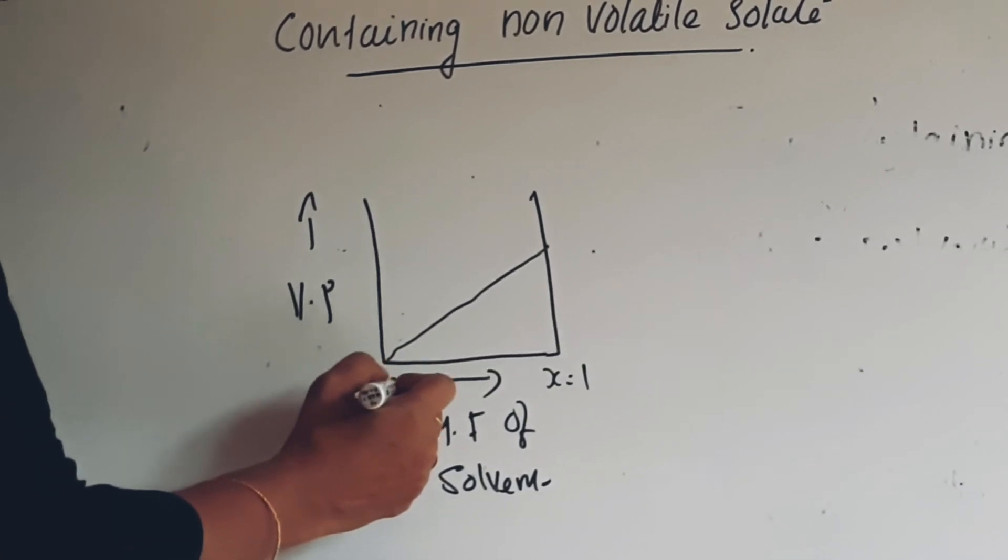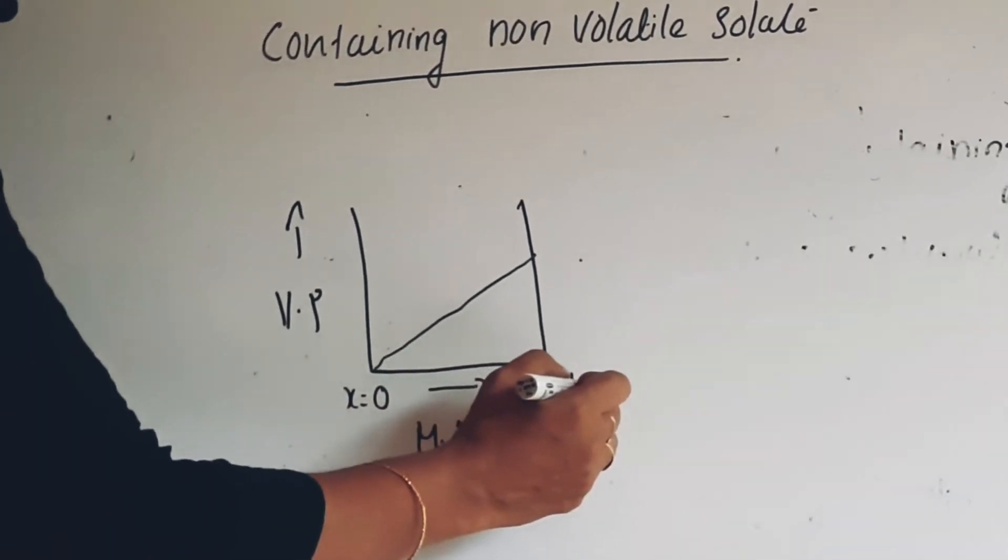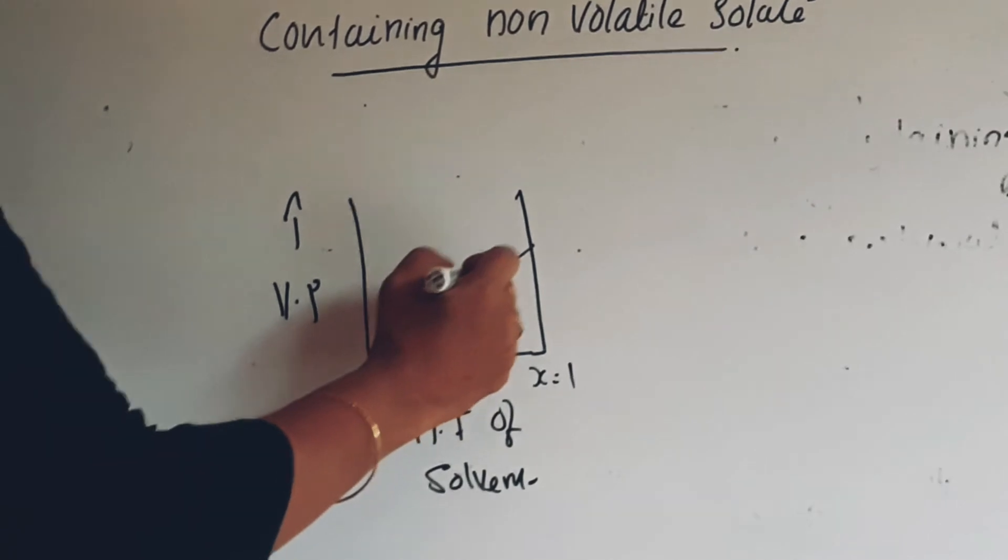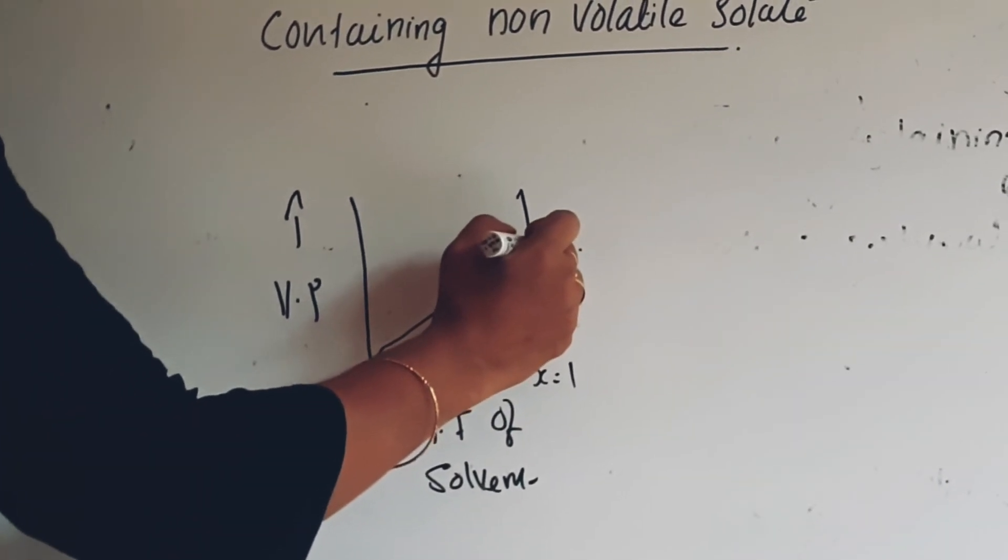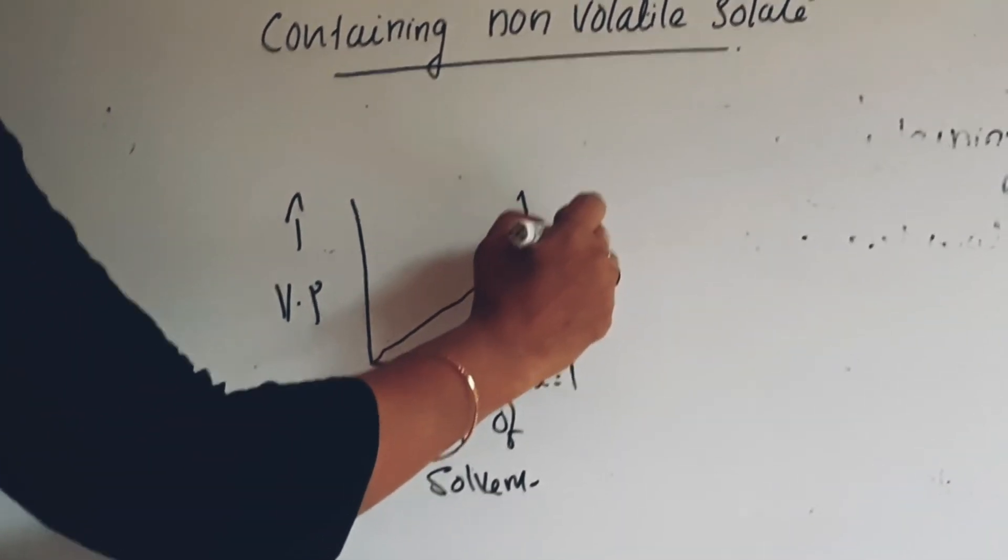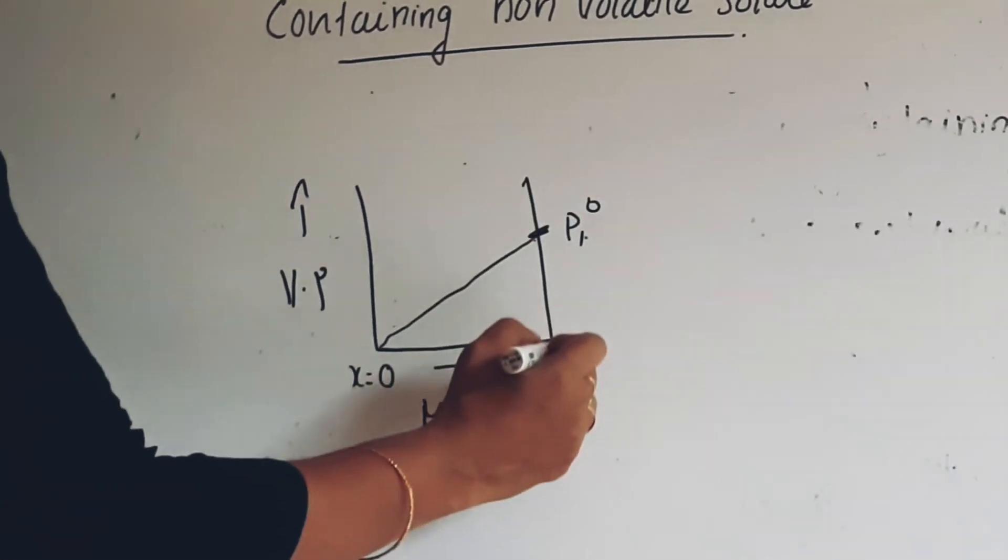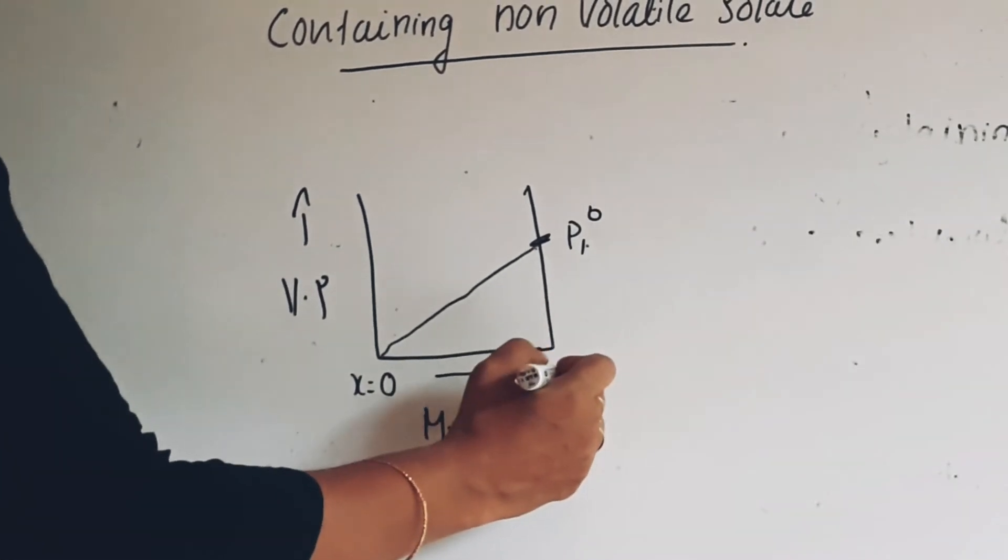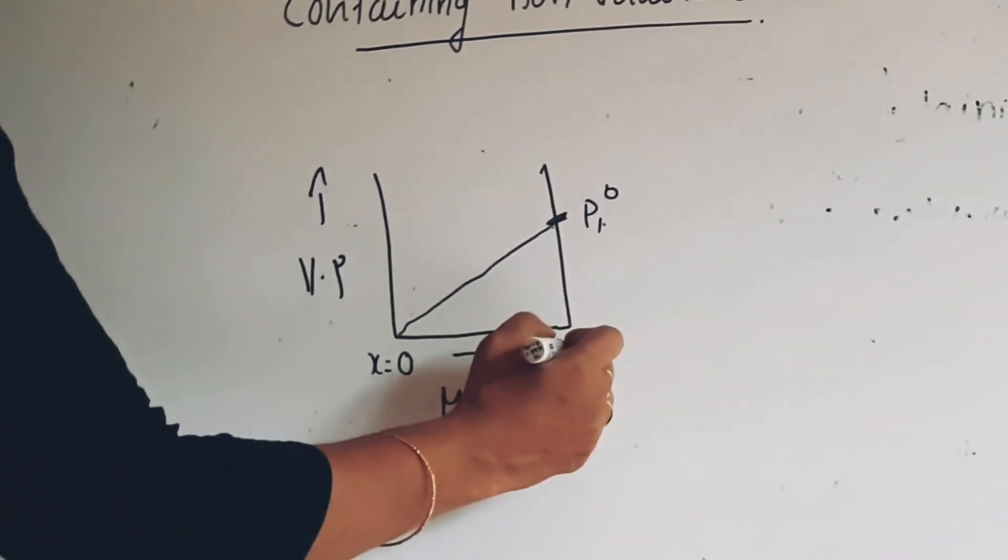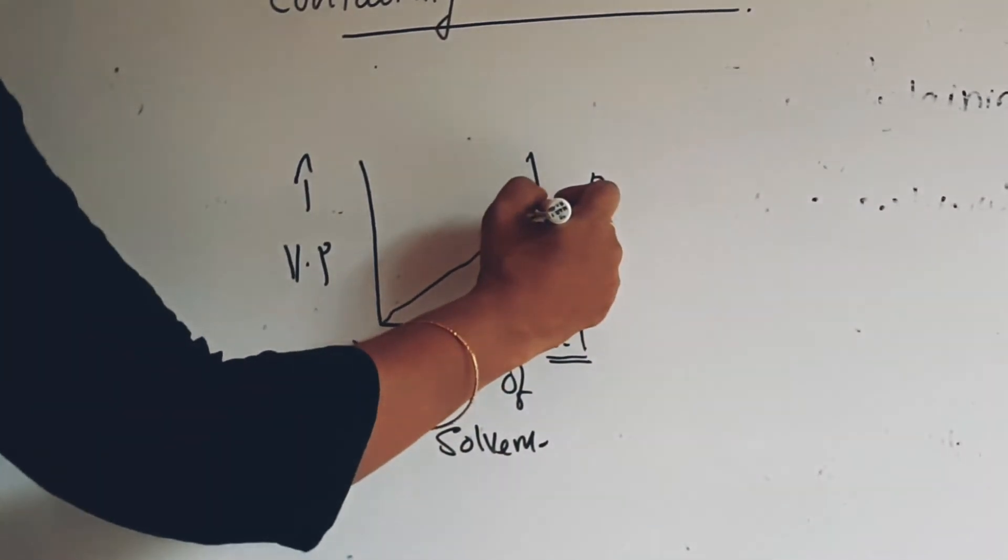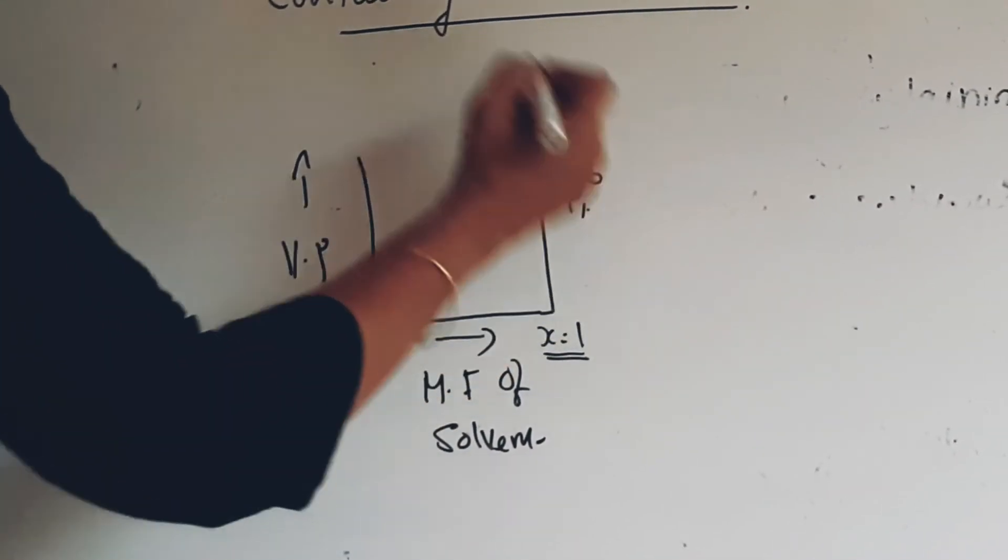So from X is equal to 0, when we move to X is equal to 1, you can see it varies in the linear form. And this position, you can call it as P1° because this is vapor pressure of pure solvent. Here, solute is not contributing. So X is equal to 1 and here this point is P1°.